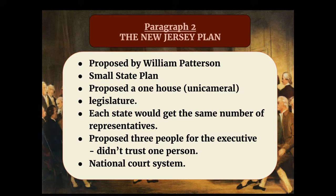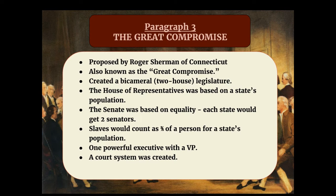The third paragraph should be about the compromise that essentially blended these plans together and helped the constitutional convention move forward with everyone feeling like they got something they wanted. The Great Compromise is also known as the Sherman Compromise, or the Connecticut Compromise, because it was proposed by Roger Sherman of Connecticut. Mostly it's known as the Great Compromise. It did create a bicameral legislature, so in that case it was more similar to the Virginia Plan.